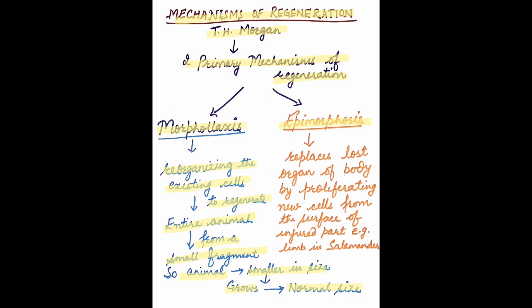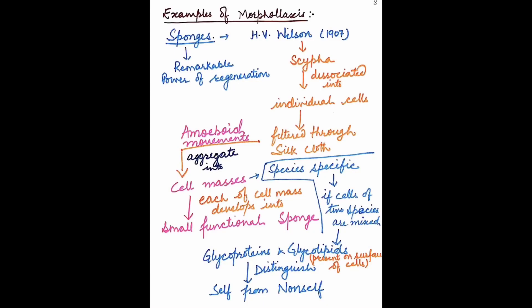Epimorphosis involves the replacement of the lost organs of the body. It replaces the lost organ by proliferating new cells from the surface of the injured part. An example is limb regeneration in salamander, which we will discuss later.